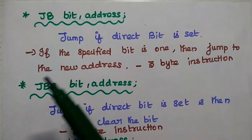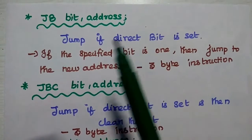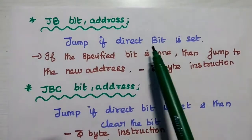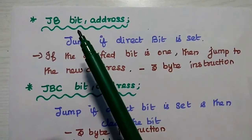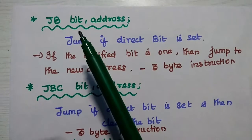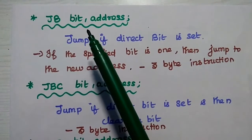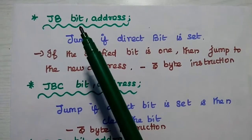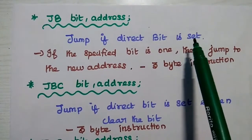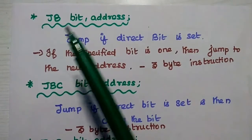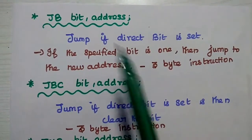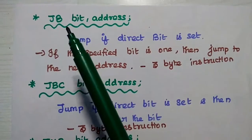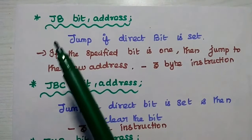JB bit, address means jump if the direct bit is set. The direct bit is the given bit in the instruction — the tested bit, which should not be modified. We check whether the given bit is 1 or 0; if it is set (1), transfer program control to the given address. It is a 3-byte instruction: 1 byte for the address, 1 byte for the bit, and 1 byte for the opcode.